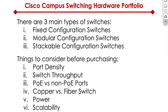A couple of things to consider before you make a purchasing decision. You need to think about how many ports you need, and whether you're buying switches for your access layer, distribution layer, or core layer, or for the entire network. If it's a brand new location, maybe you need switches for all three layers, or maybe you only need two layers instead of a three-tier architecture.